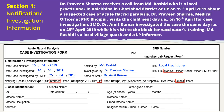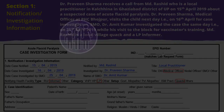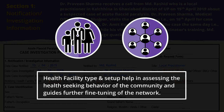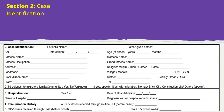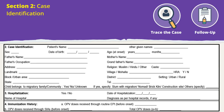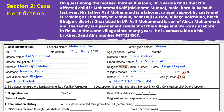The case was notified on 15 April and was investigated on 16 April. Health facility type, category, and setup help in assessing the health-seeking behaviour of the community and guide further fine-tuning of the network. Case identification details are important to trace the case for epidemiological investigation and follow-up when required. Under identification details, ensure that date of birth, address, and mobile number are correct and complete.